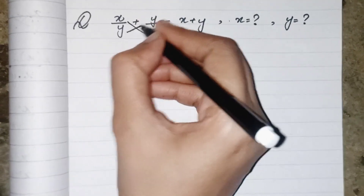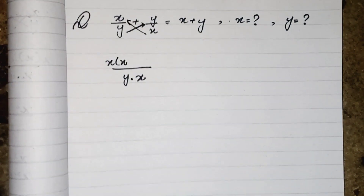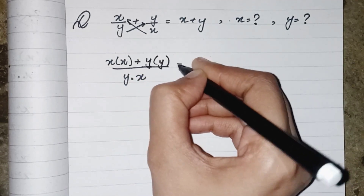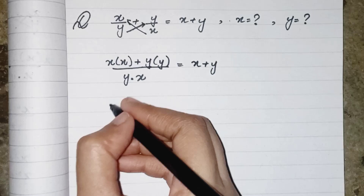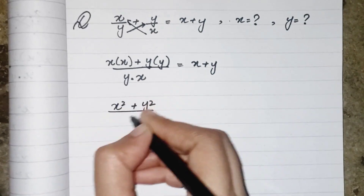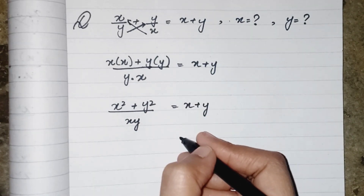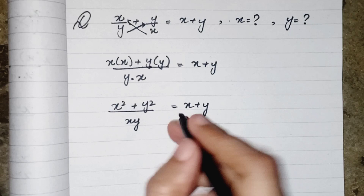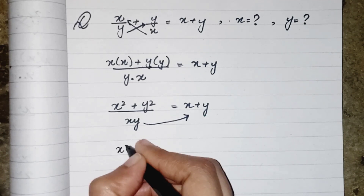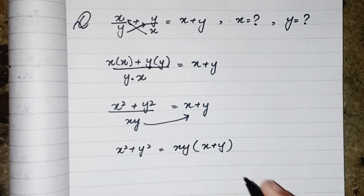For the numerators we apply the cross multiplication method: x multiplied by x, and y multiplied by y, equals x plus y. So x times x gives us x square, y times y gives us y square, and x multiplied by y gives us xy. Moving the denominator to the other side, x square plus y square equals xy multiplied by x plus y.